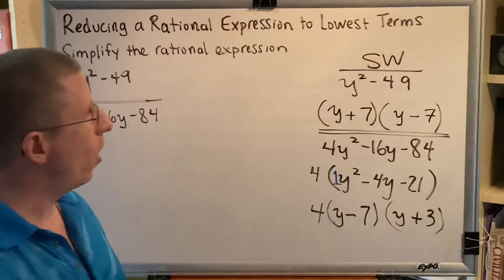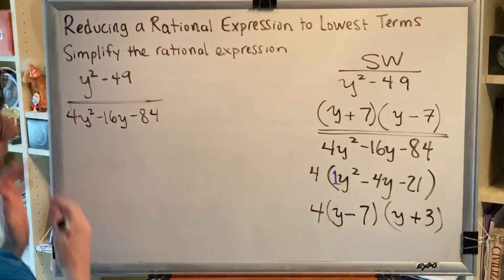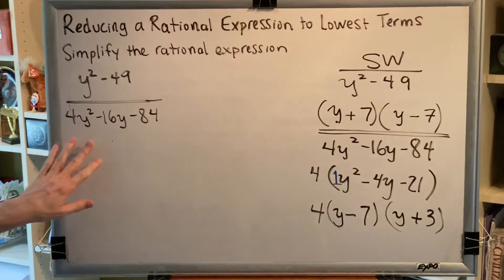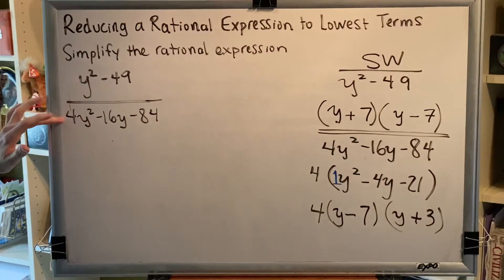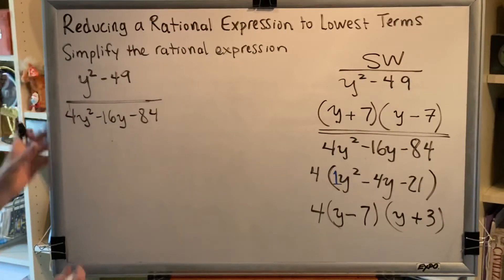So now that we've done both of these factoring steps, we're ready to come back to where we were. And we're going to now replace each numerator and denominator with the factored versions that we found. So for example, up top, we're going to write y plus 7, y minus 7.